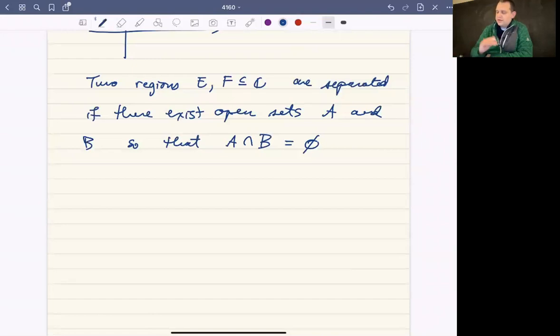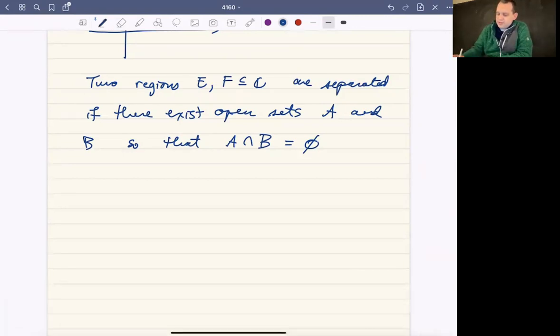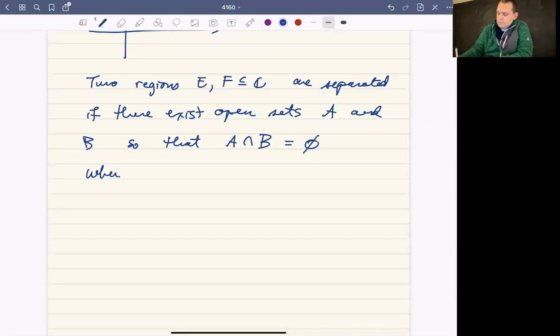So let me start again. Two regions, E and F, are separated if there exist disjoint open sets A and B, such that E is a subset of A, and F is a subset of B.